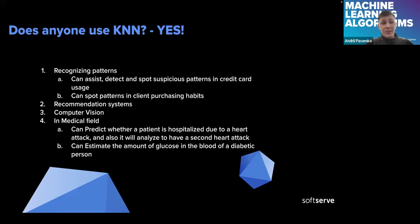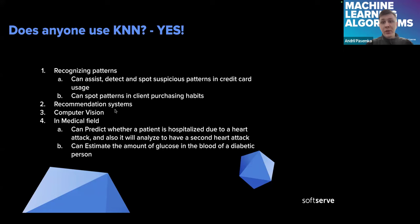Does anyone actually use this algorithm? Yes, it's very popular. It's used in pattern recognition — for example, distinguishing different animals in photos. It's used to spot patterns in client purchasing habits, such as at Amazon to find out what products customers would buy. It's used a lot in recommendation systems — for example, suggesting new music tracks on Spotify or Apple Music. It's also used in computer vision, in the medical field, and in many other spheres of human activity.